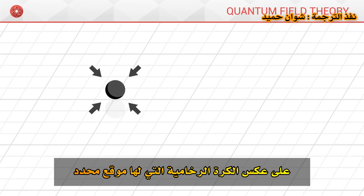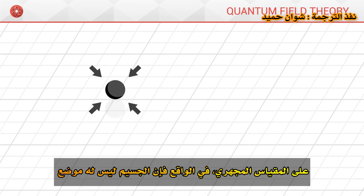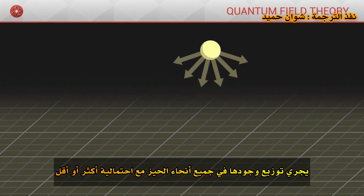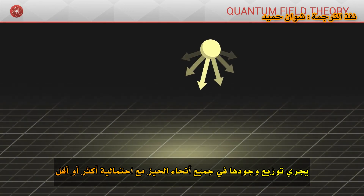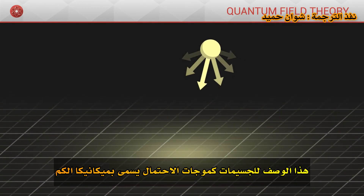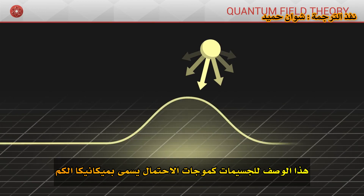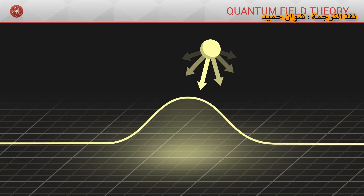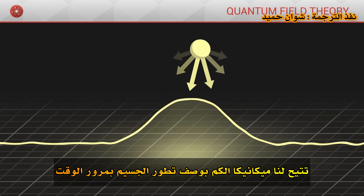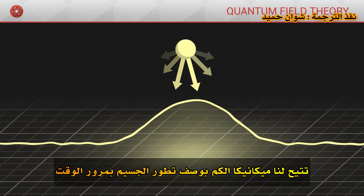Unlike a marble which has a definite position, at the microscopic scale a particle does not really have a position — its presence is distributed throughout space with more or less probability. This description of particles as waves of probability is called quantum mechanics. Quantum mechanics allows us to describe the evolution of a particle over time.